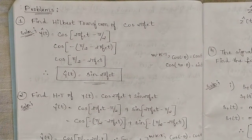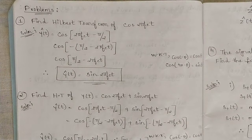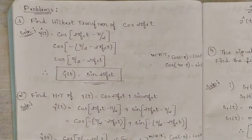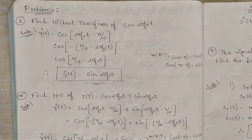Hello everyone, welcome to this new video. In my previous videos we discussed some concepts from Module 1 related to complex envelope and canonical representations of complex envelopes. We also discussed the Hilbert transform properties — there are 4 important properties of Hilbert transform. Those who have not watched that video, please go and watch it; it is available just before this video in the playlist.